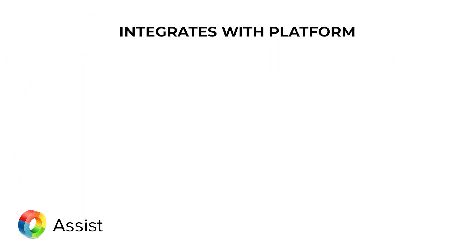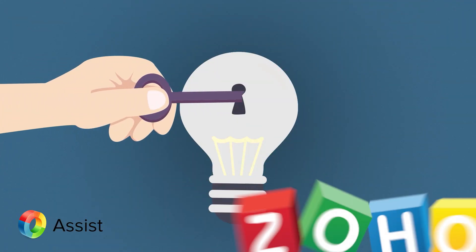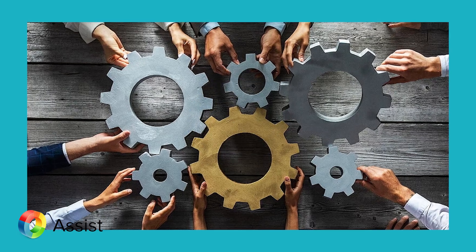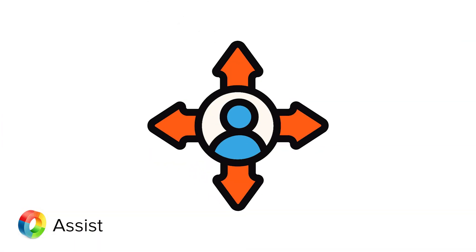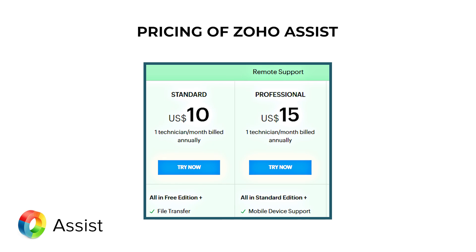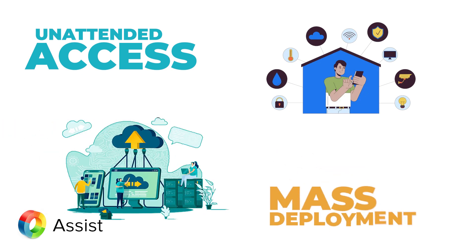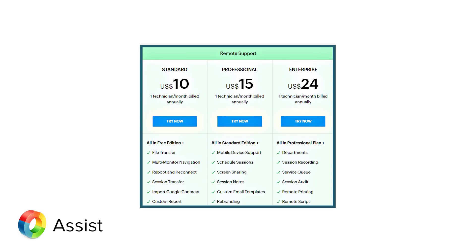Zoho Assist integrates seamlessly with other Zoho products like Zoho CRM, Zoho Desk, and Zoho Projects, making it an ideal choice for teams already using the Zoho ecosystem. It also supports integrations with third-party tools such as Microsoft Teams and Google Workspace. Zoho Assist offers a free version for personal use or small teams. For businesses, paid plans start at $10 per month per technician, offering features like unattended access and mass deployment — super competitive pricing for supporting multiple devices.